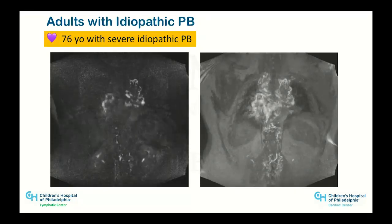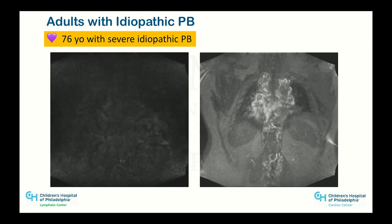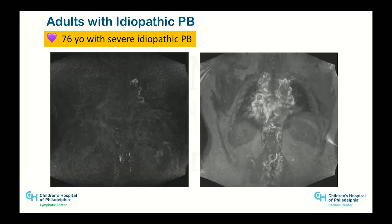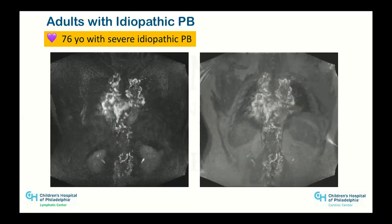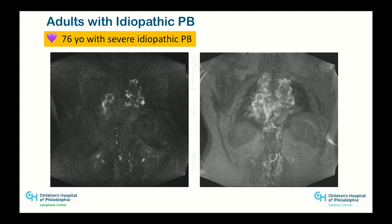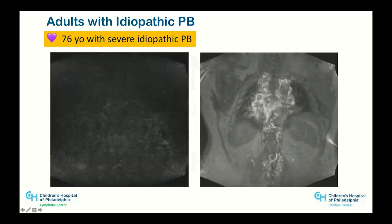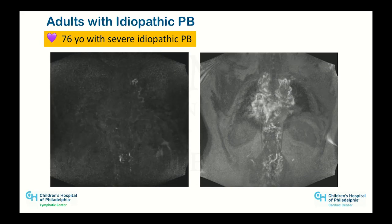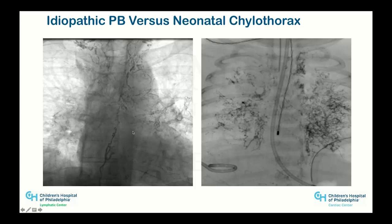This is a 76-year-old with severe idiopathic plastic bronchitis who was living his entire life with this pulmonary perfusion — it looks exactly like the babies — and never knew about it. He thought he was completely normal until he started coughing up casts. Very treatable: we put a coil and glue in the duct, shut down the entrance, and his plastic bronchitis went away just like that. He is living a completely normal life now.